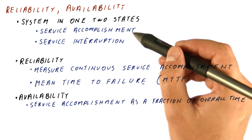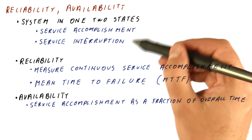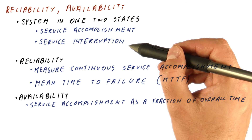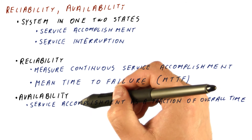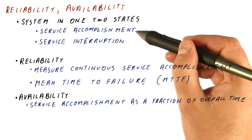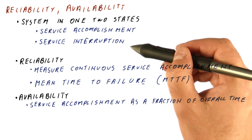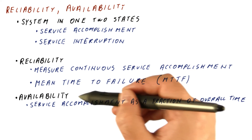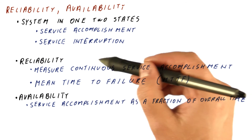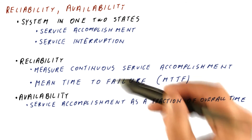For example, if you have one year of service followed by one year of service interruption, you get 50% availability and one year for reliability. But if you get one month at a time for two years, you still get 50% availability, but you get one month for reliability instead of a year.